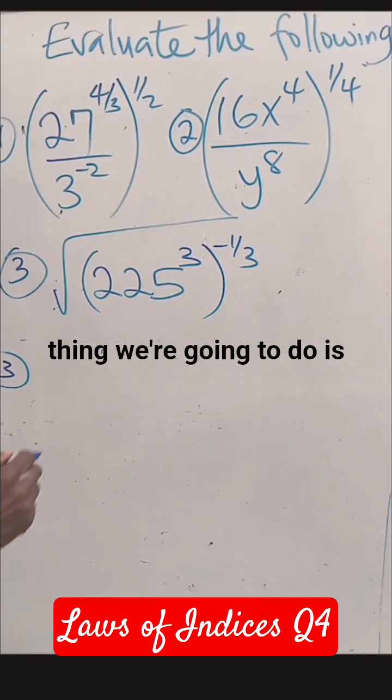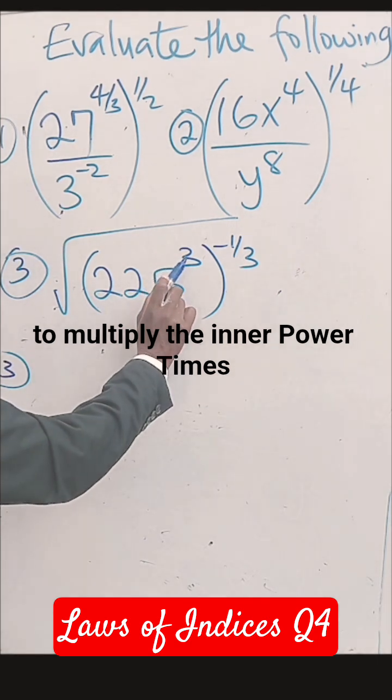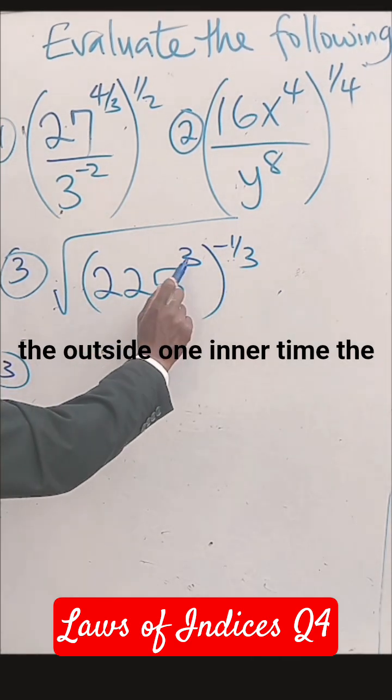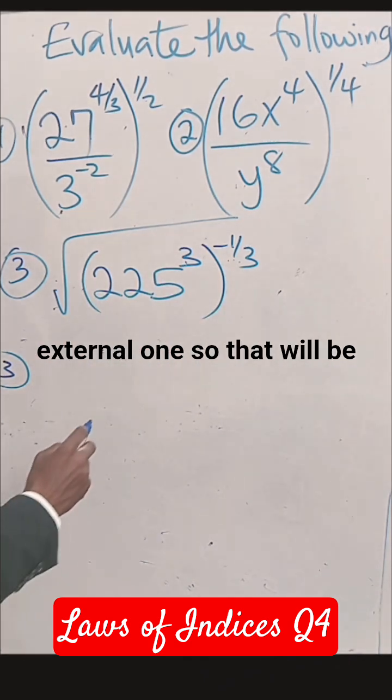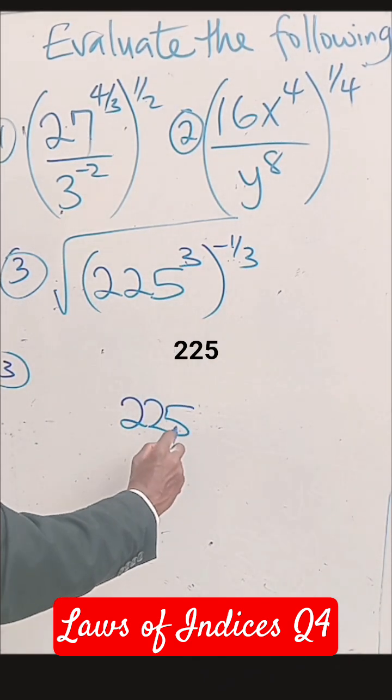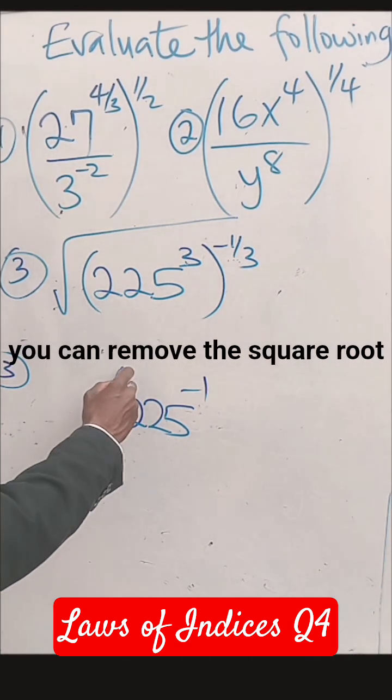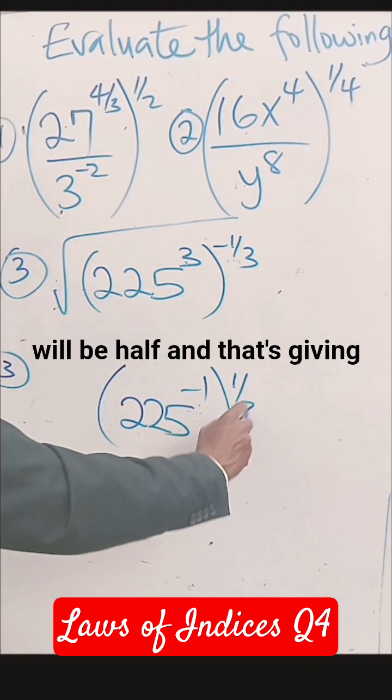The first thing we are going to do is to multiply the inner power times the outside one, inner times the external one. So that will be 2 to 5 minus 1, 3 times this one, that will give us minus 1. You can remove the square root, which will be half.